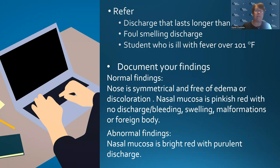When documenting, normal findings could be documented as: the nose is symmetrical and free of edema or discoloration; nasal mucosa is pinkish red without discharge, swelling, malformations or foreign bodies. Abnormal findings might be documented as: nasal mucosa is bright red with purulent green discharge. As you know, you're going to document what you see.